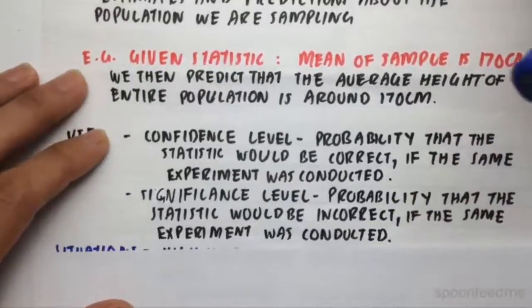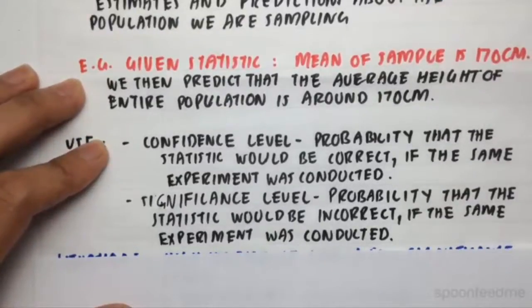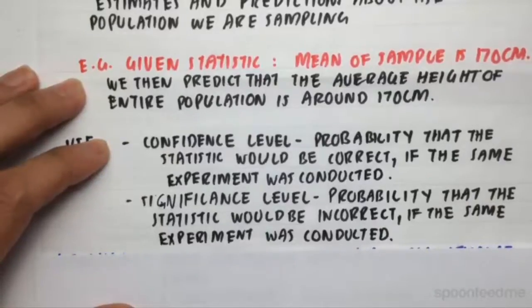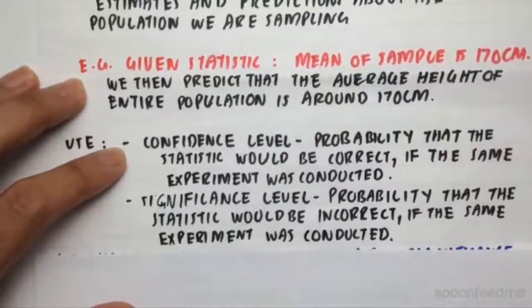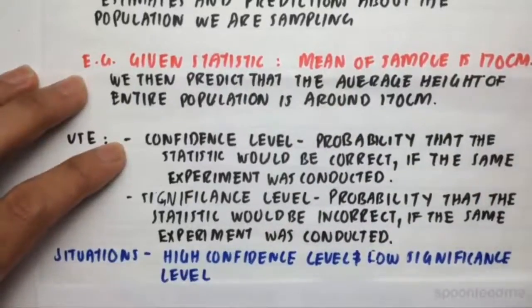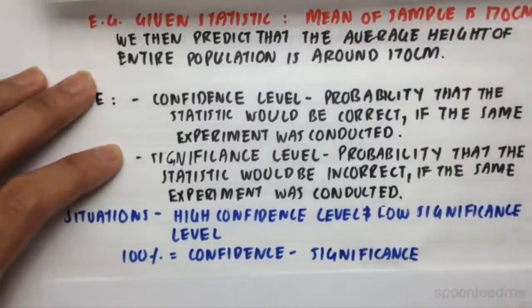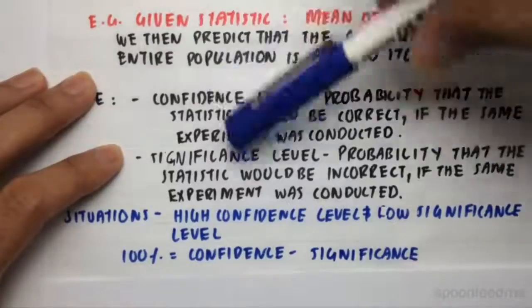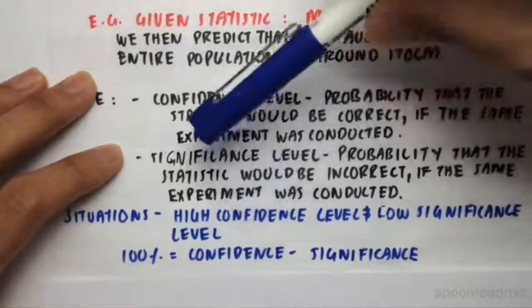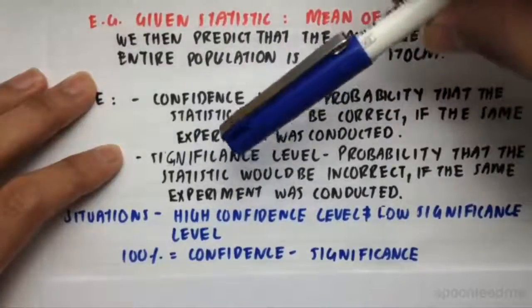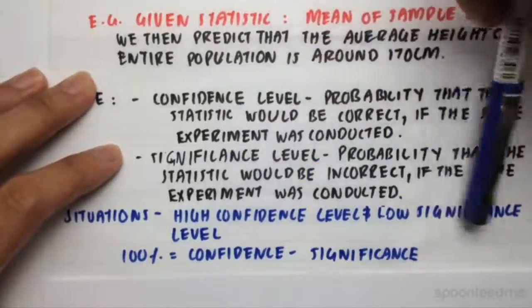Then we also have something called the significance level, which is pretty much just the opposite. So the probability that the statistic would be incorrect if the same experiment was conducted. So of course, we want to have the highest confidence level that we can and the lowest significance level that we can as well. So there are a couple of situations. We can have high confidence level and low significance level, which means most likely we have a high probability that that 170 centimeter mean would be right or it would be similar if we tested it again.